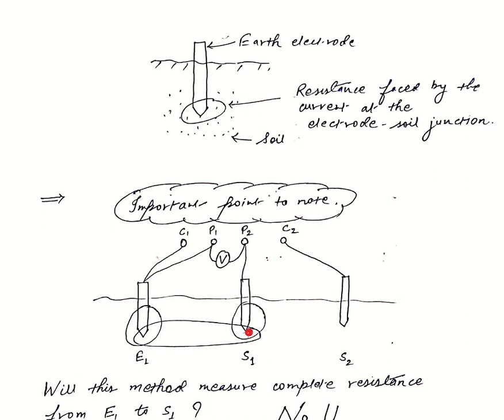And we want resistance of this region, and this spike method actually measures only this resistance but not the resistance of these two regions. Why?